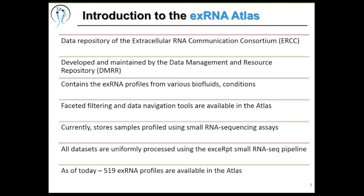Currently we store samples profiled using small RNA sequencing assays. We'll be adding qPCR XRNA profiling datasets very soon, but right now it's small RNA-seq. The datasets are uniformly processed using the XRNA pipeline, which is developed by the Data Integration and Analysis Component at Yale University — Dr. Mark Gerstein is the head of that component. As of today, we have about 519 XRNA profiles in the Atlas, and we're adding more samples as they are processed.